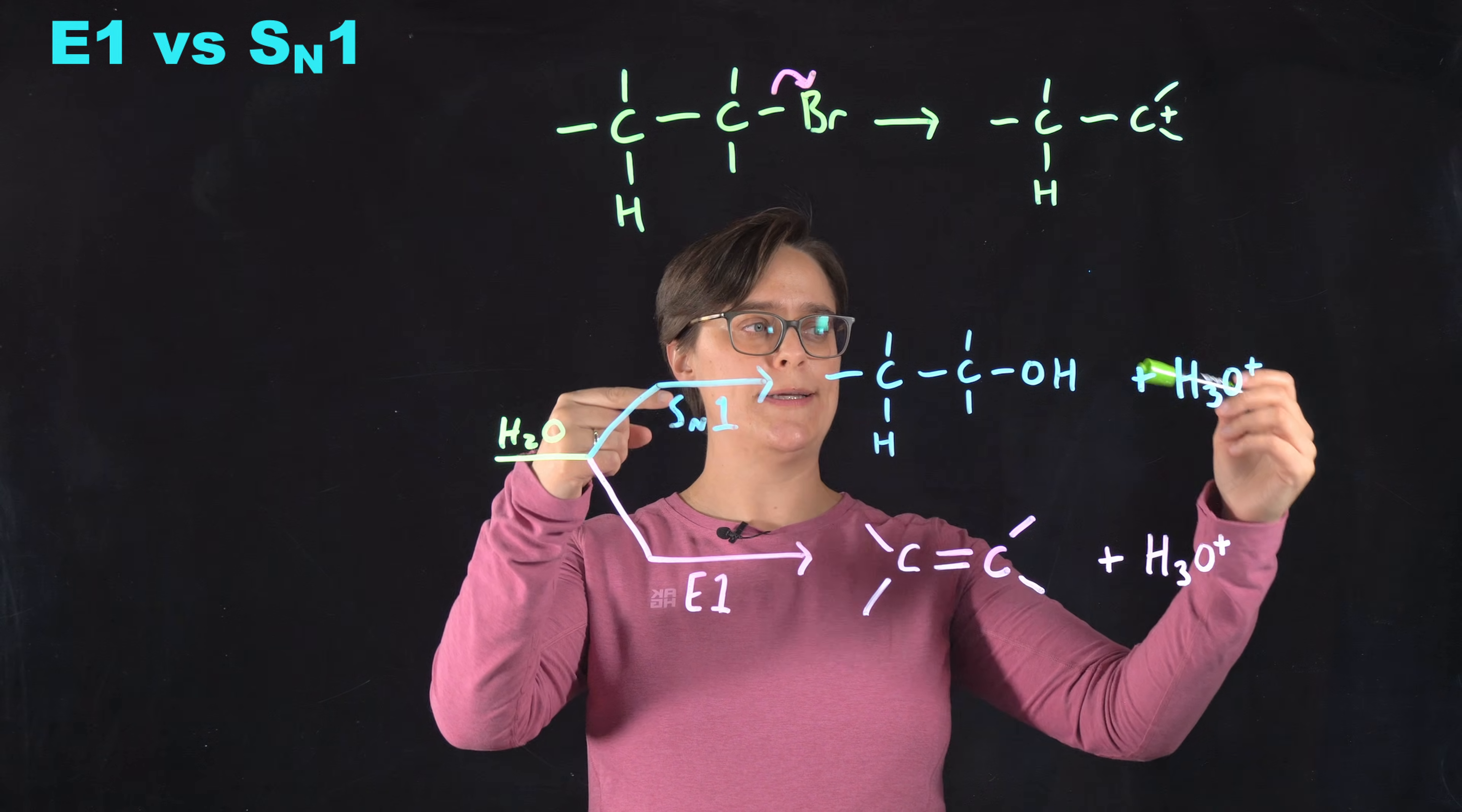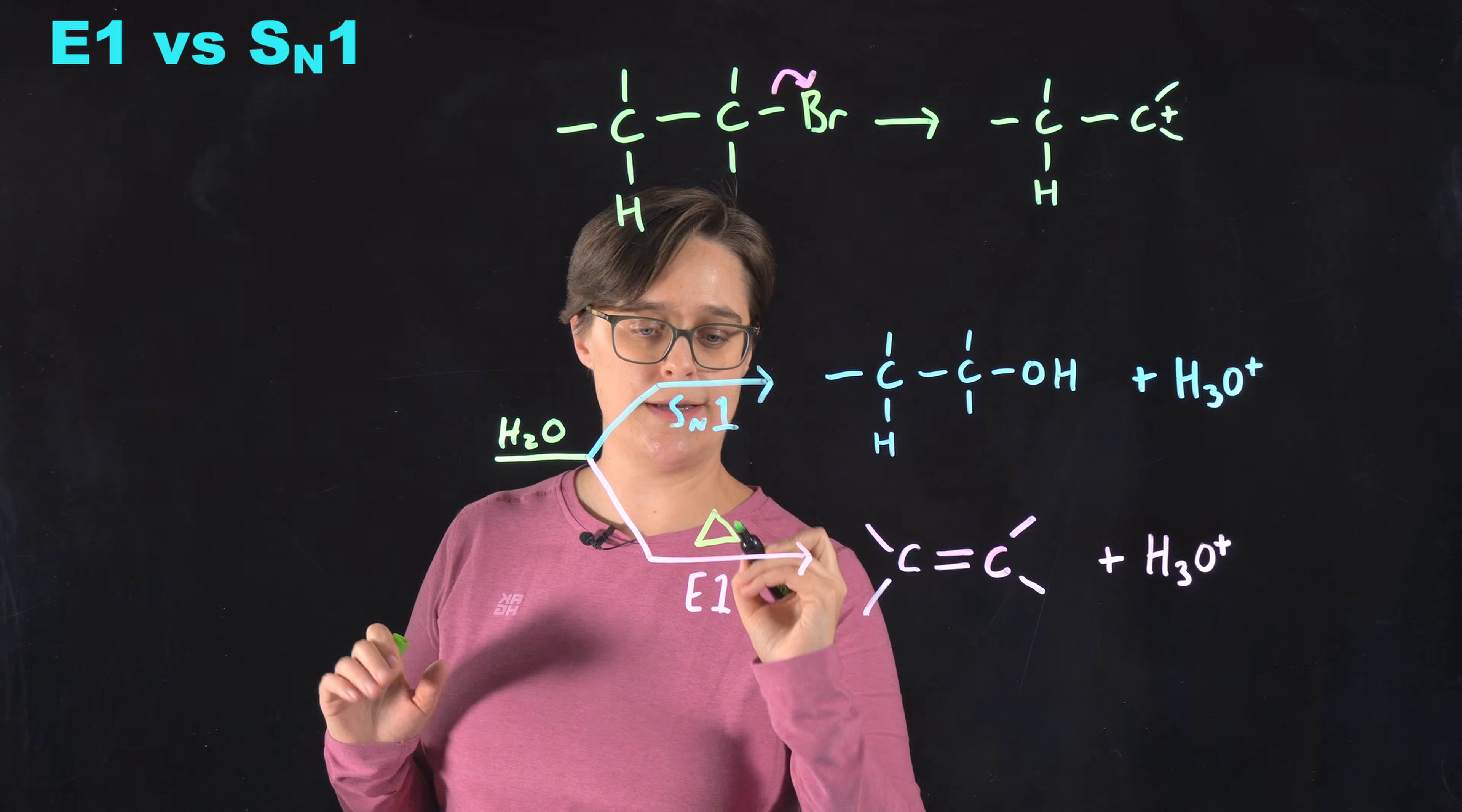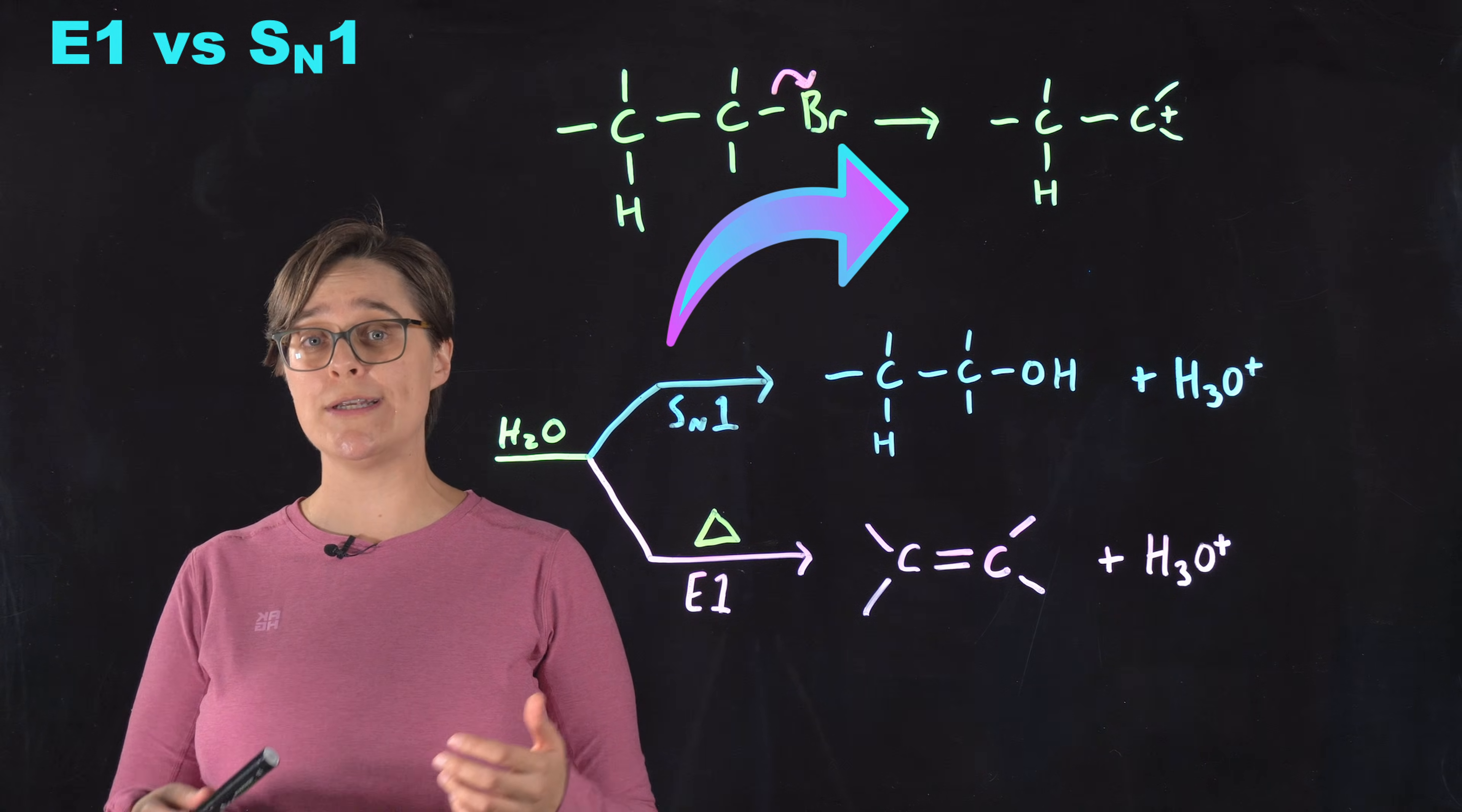But you can control which of these products there is more of by controlling the temperature. So the SN1 mechanism predominates at lower temperatures, meaning like room temperature, and E1 is going to predominate when heat is applied. So remember that the abbreviation for heat being applied to a reaction is a capital delta being written at the reaction arrow. So if heat is applied, E1 is going to predominate. So if you are in a situation where E1 can't occur or is less likely to occur, you need to start thinking about what can occur instead.